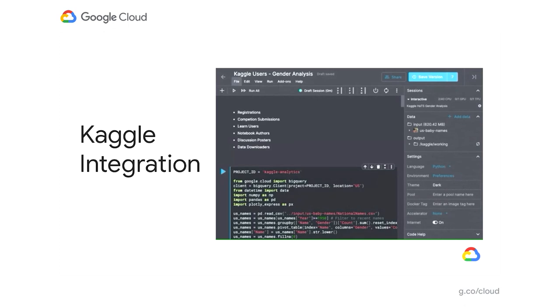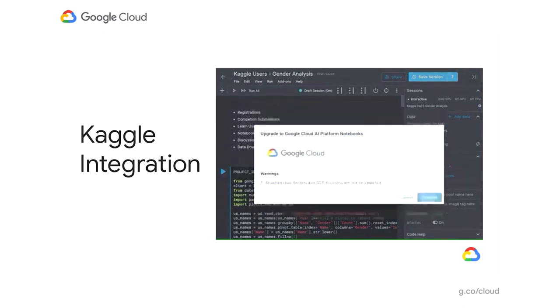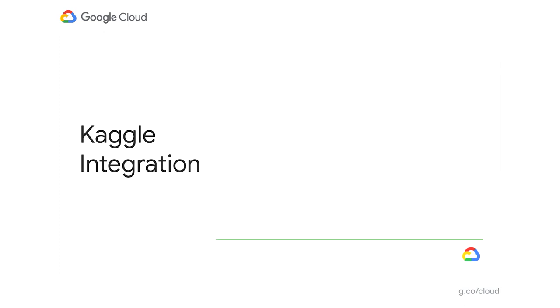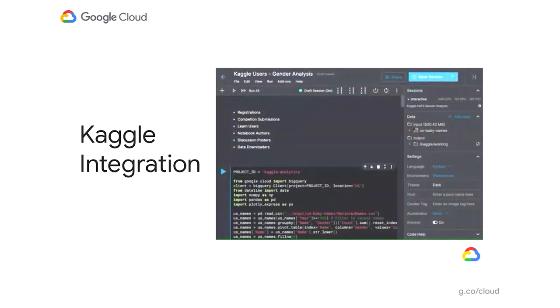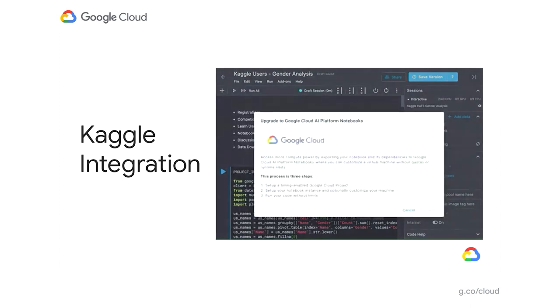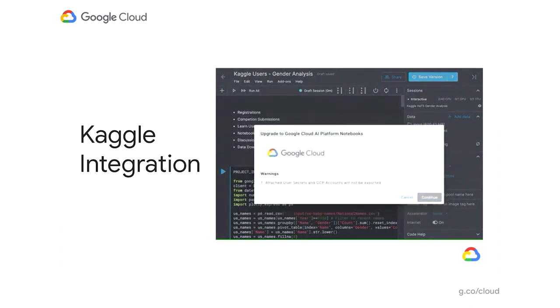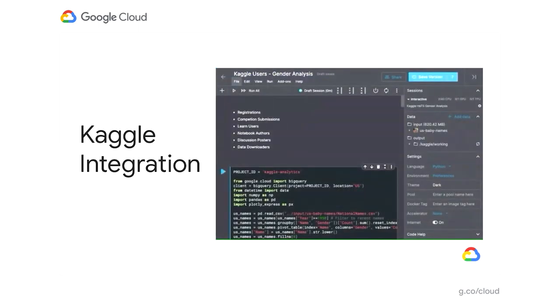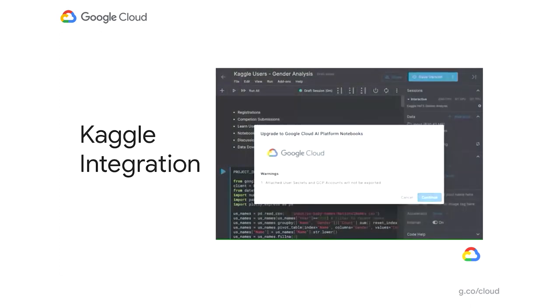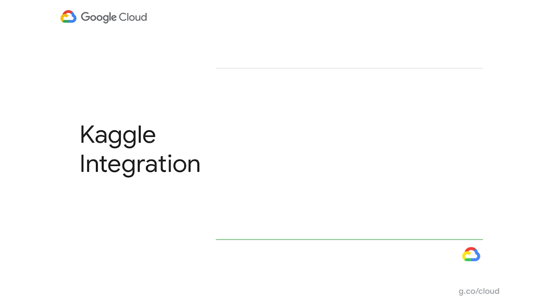Let's talk about some recent updates we have made to our notebook service in the last six months. We recently announced an integration with Kaggle, a community of five million data scientists who write and share code. With this integration between Kaggle and AI Platform Notebooks, customers have access to GCP's limitless and customizable compute environment, allowing users to scale up their work very easily. We've already seen thousands of customers from Kaggle move to Cloud AI Notebooks using this integration.